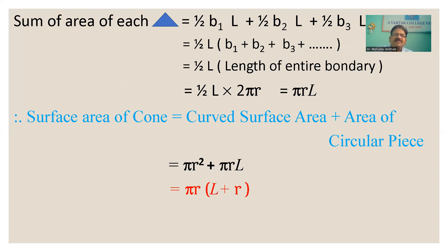From that formula, take one-half L as common: one-half L × (B1 + B2 + B3 + ...). The sum B1 + B2 + B3 is the total boundary length of the cone base, which equals 2πr. So the curved surface area formula becomes one-half × L × 2πr = πrL. The total surface area of the cone equals curved surface area plus area of the circular base: πr² + πrL.